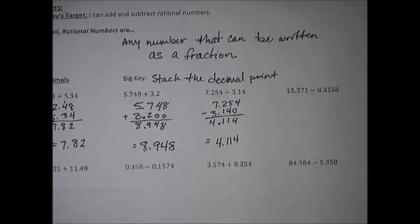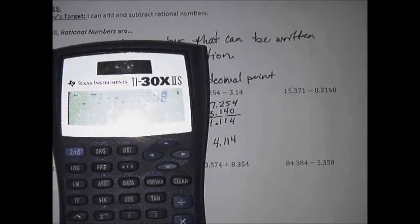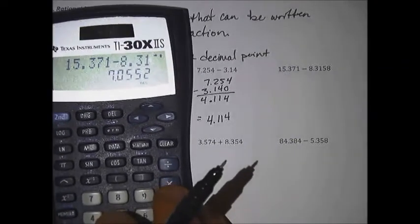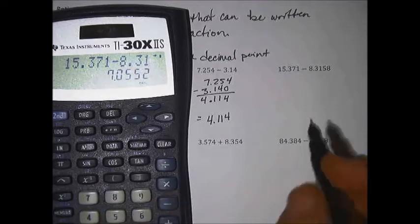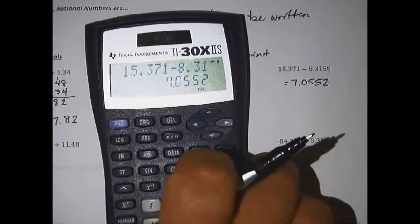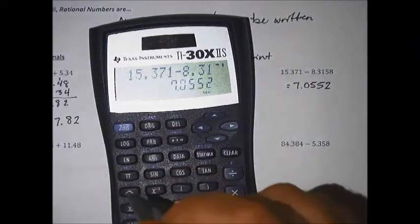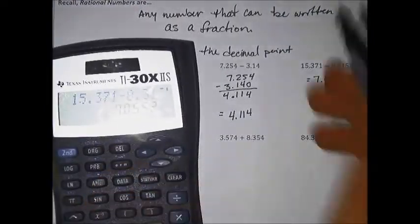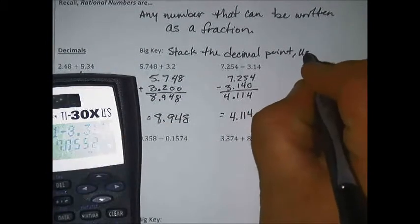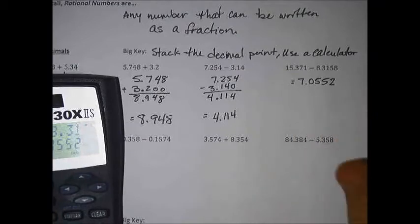If it was the other way around it would give us a negative. Most of the time when I'm dealing with adding and subtracting decimals, I'm going to use a calculator — just grab a calculator and type it in: 15.371 minus 8.3158, hit enter and it gives me 7.0552. Sometimes it may be helpful to do the problem by hand and check with a calculator, but I'm fine with just answering straight with a calculator. Use a calculator when working with decimals — it makes it quicker and easier.